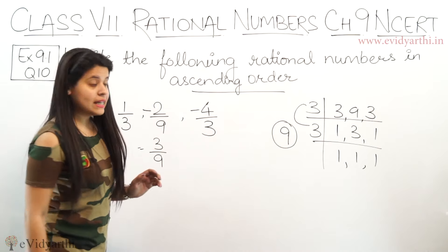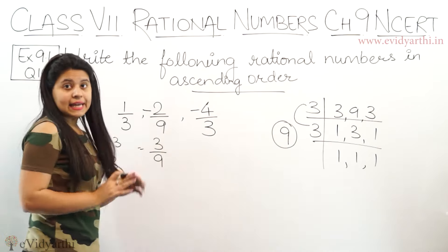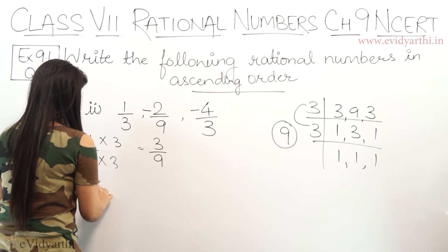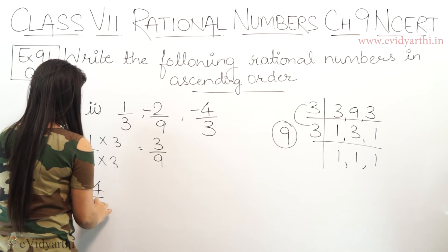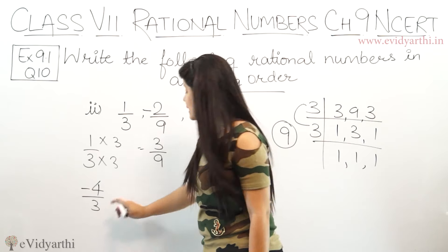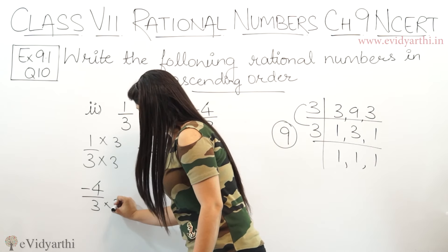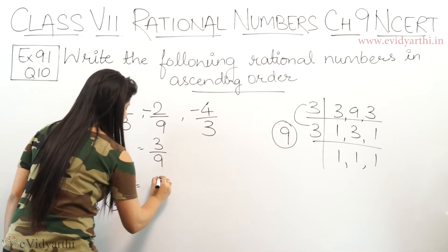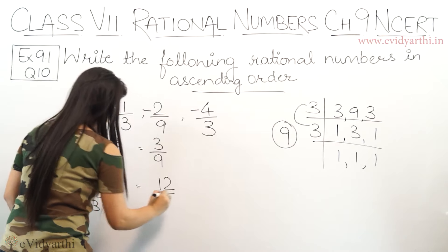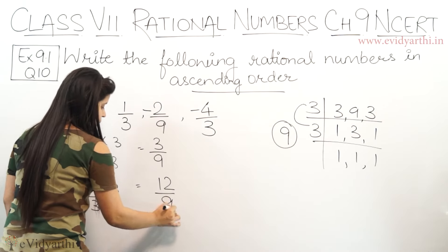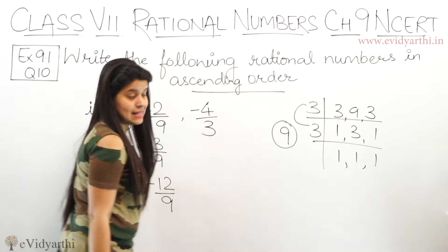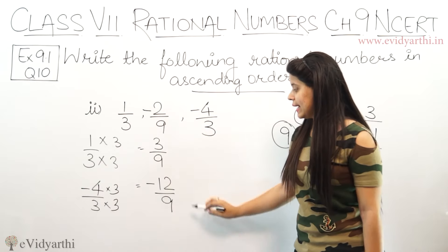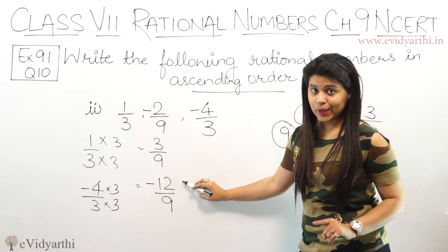Next है minus 2 upon 9. यह already 9 है, मतलब हमें इसको change करने की जरूरत नहीं है. So यह minus 2 upon 9 रहेगा. This is minus 4 upon 3 — अब इसको 3 से multiply करना पड़ेगा. This will be 3×9 and ऊपर भी 3 से multiply करेंगे. So we'll get minus 12 upon 9. Now the numbers we have are: 3 upon 9, minus 2 upon 9, and minus 12 upon 9.